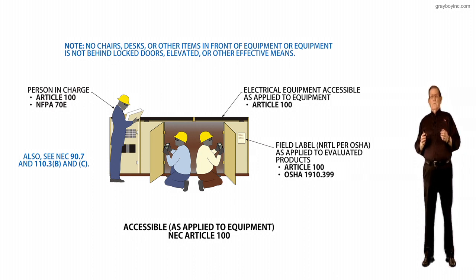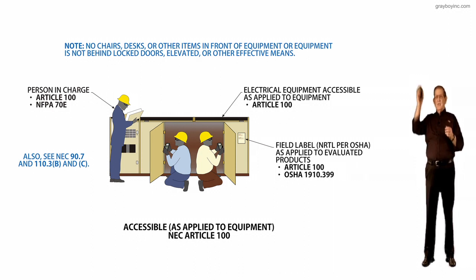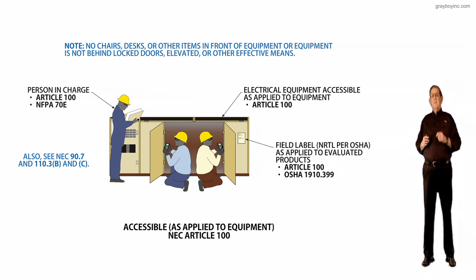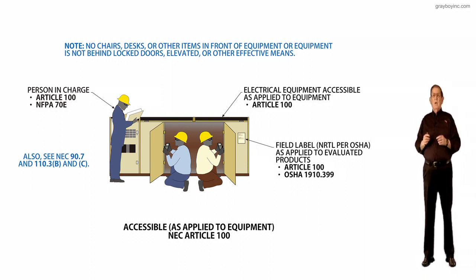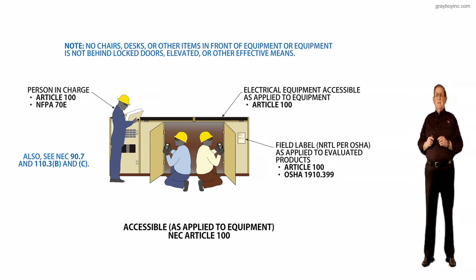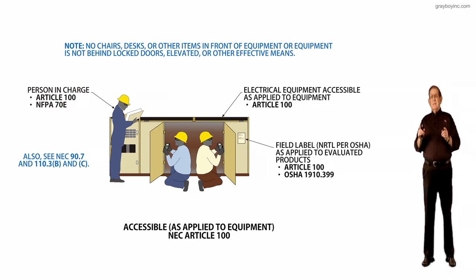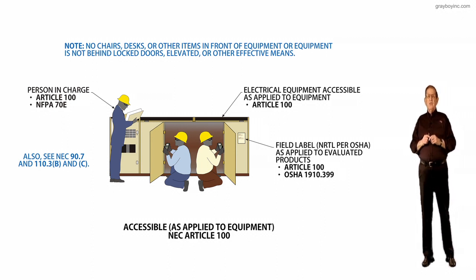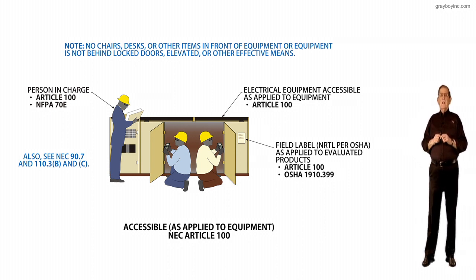For example, if you had a suspended ceiling and you could remove the suspended ceiling tile and have access into the attic to a junction box and so forth, that's accessible. So that's considered what accessible would be. But they wanted to clarify this as it applied to equipment, and this new definition will do exactly that.